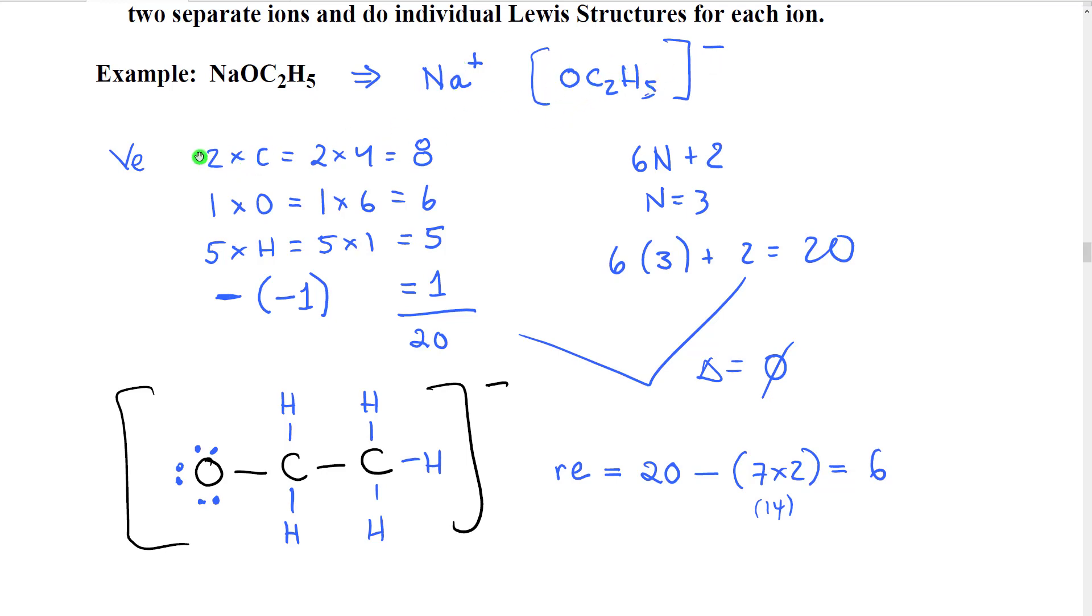So in this formula, we have two carbons, we have one oxygen, we have five hydrogens, and we have a charge. So what we are going to do is we are going to subtract the charge with the sign of the charge. So since this is a negative one, we're going to subtract negative one. When we subtract a negative number, we actually add a positive number. So therefore we get eight plus six plus five, which would be 19, plus one additional electron, 20 valence electrons in this formula.